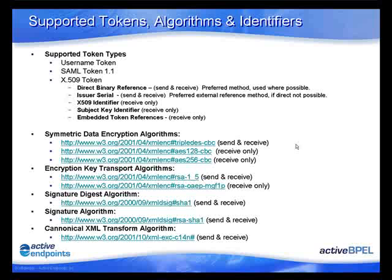From a detailed perspective, the supported token types include the username token, SAML token — specifically SAML version 1.1 tokens — and for X509, a number of token references are used. Wherever possible, we'll use a direct binary reference to an X509 token, directly embedding the encoded certificate within the message without requiring an external reference. If that's not possible, we'll use issuer serial as the identification method for an X509. Other token reference types are supported, but only when receiving — if we can identify and process the token, it will be acceptable.